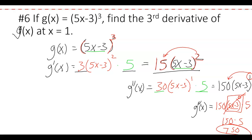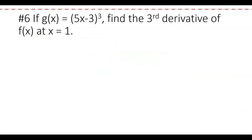The third derivative at x = 1 is 750. Since there are no remaining x terms after differentiation, there's nothing to plug in — the answer is simply 750. If your version still has an x remaining, just substitute x = 1 at that point.